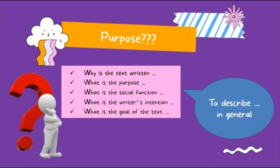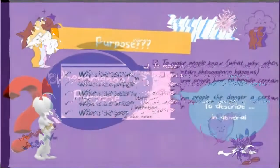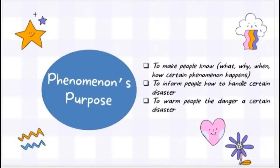The purpose of report text is to describe in general. The other purposes are based on the types of report. One of them is phenomenal purpose. The first is to make people know about what, why, when, and how certain phenomena happen. The second is to inform people how to handle certain diseases. The third is to warn people about the danger of certain diseases.